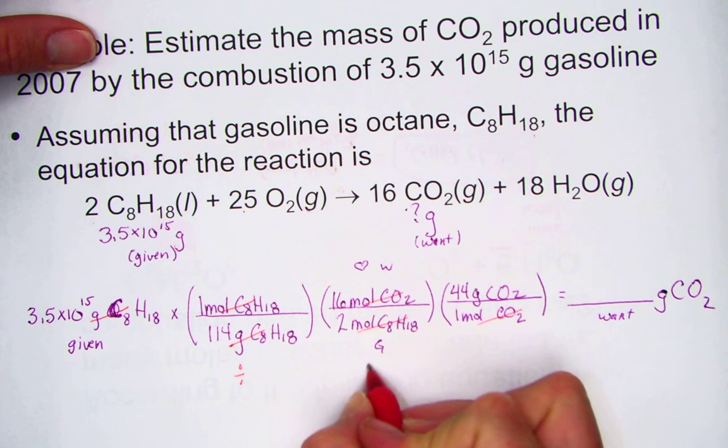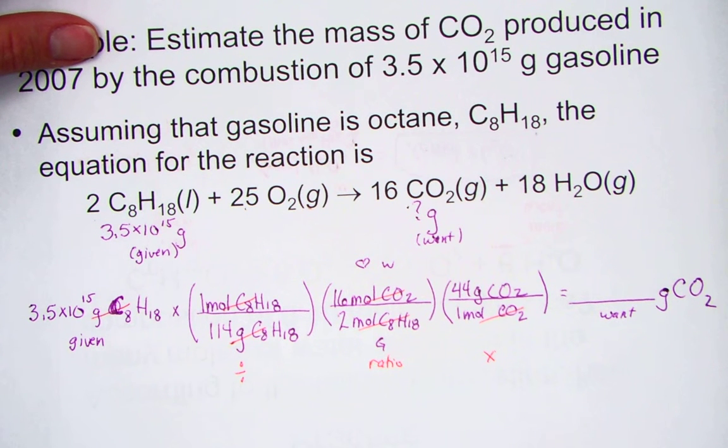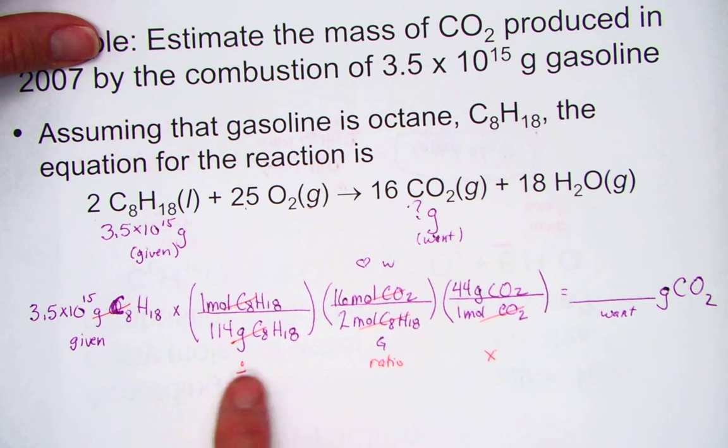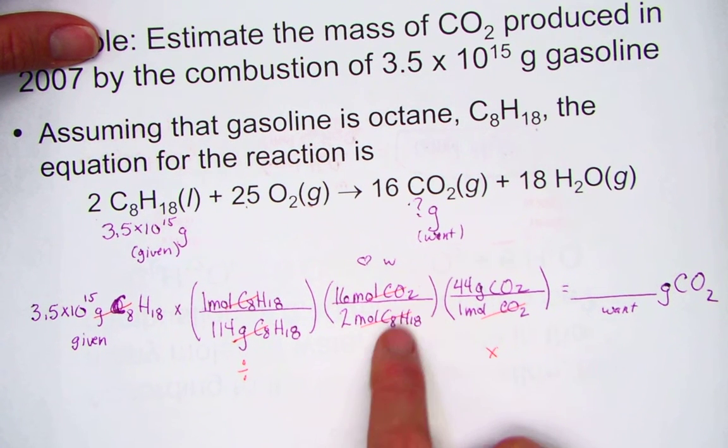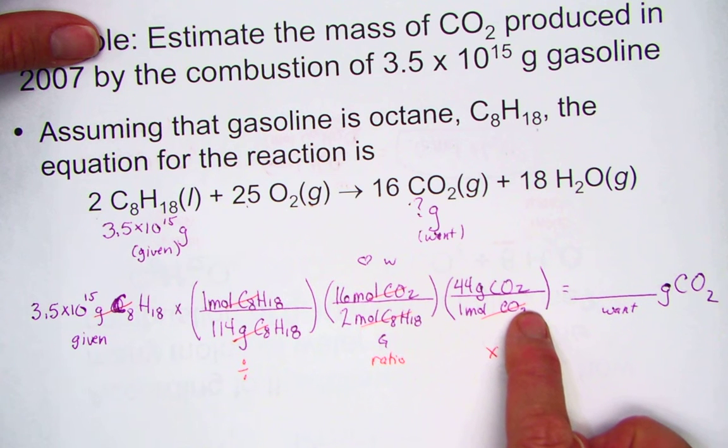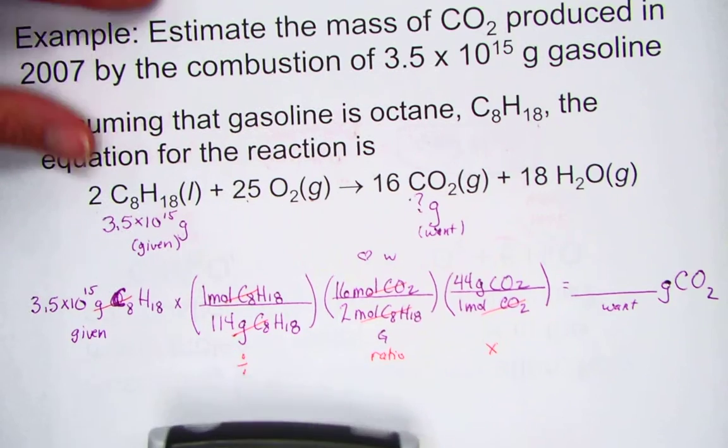Divide, ratio, multiply. The three steps to stoichiometry. Step 1, divide by molar mass of given. Step 2 is the stoichiometric ratio from the coefficients, want over given. Step 3, we multiply by the molar mass of what we want. And let's hit that together.